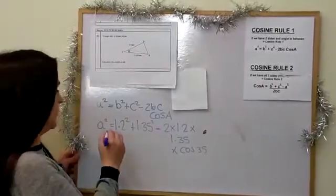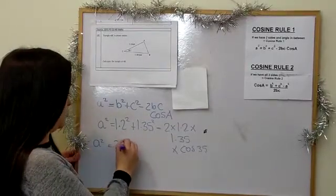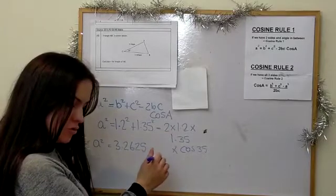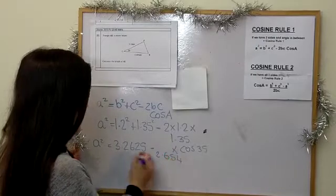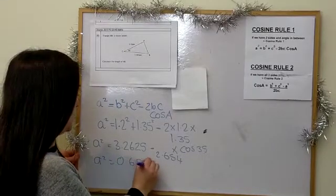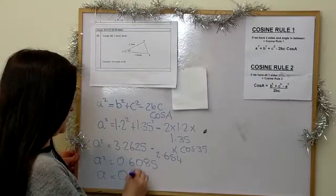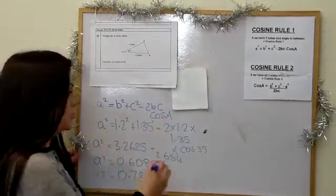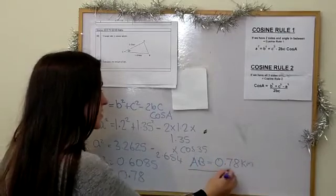Working through: 1.2² + 1.35² = 3.2625, then take away 2 × 1.2 × 1.35 × cos 35 = 2.654. So a² = 0.6085, and a = √0.6085 = 0.78. Therefore AB = 0.78 kilometers.